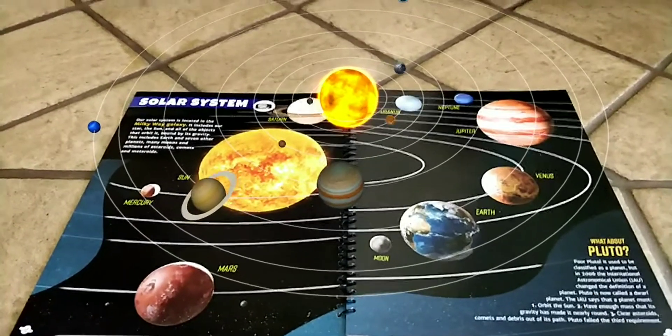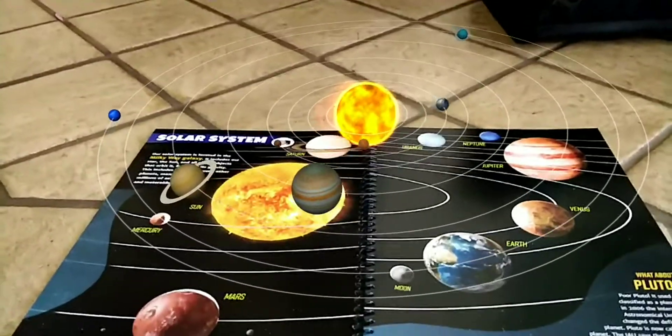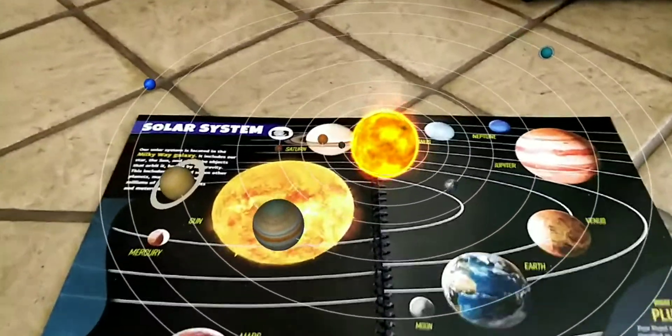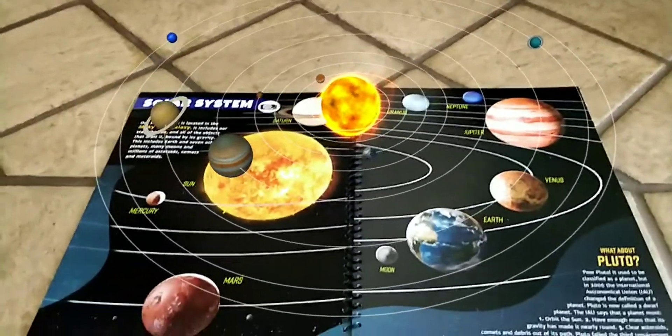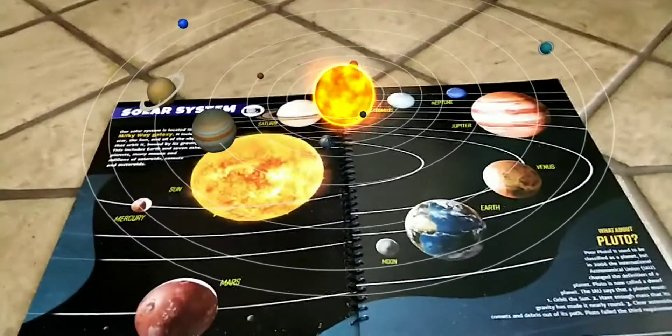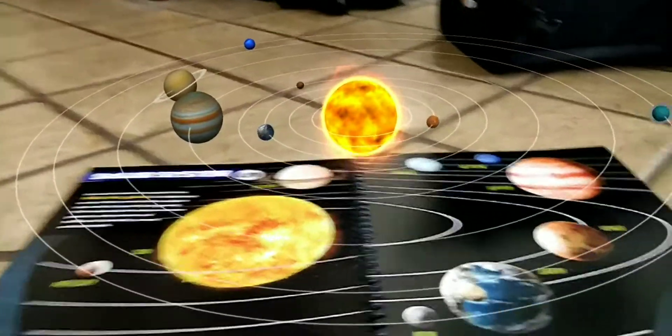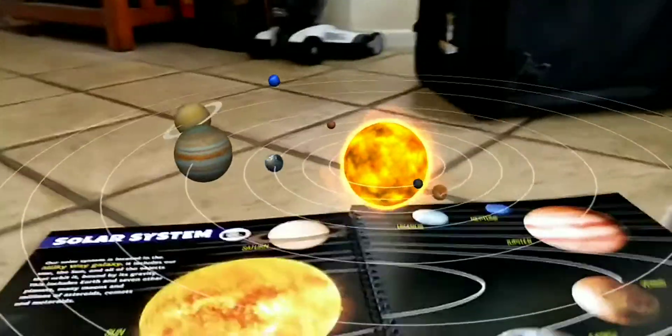The solar system is the sun and everything that rotates around it, including Earth and seven other planets, their moons, and even asteroids. The force of gravity keeps all of these objects orbiting around the sun at the same distance.